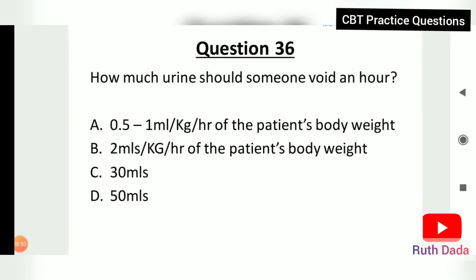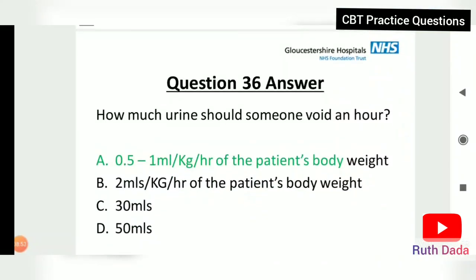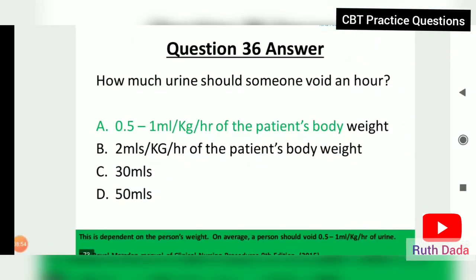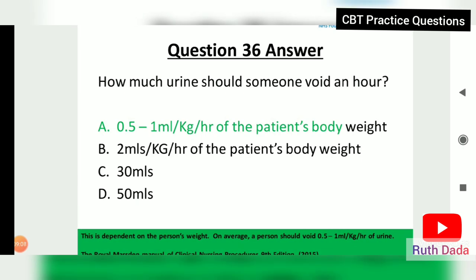Question 36: How much urine should someone void in an hour? The recommended amount is 0.5 to 1 mL per kilogram per hour of the patient's body weight. On average, a person should void at least 0.5 to 1 mL per kilogram per hour.